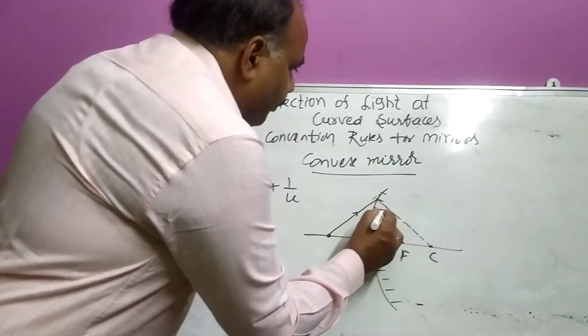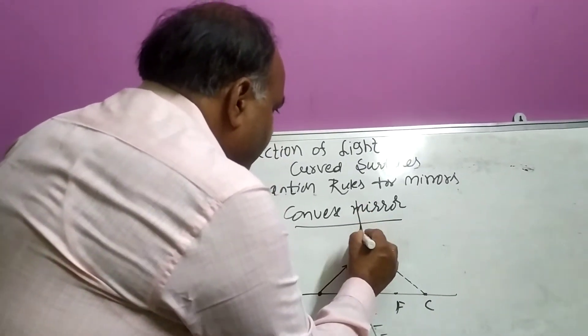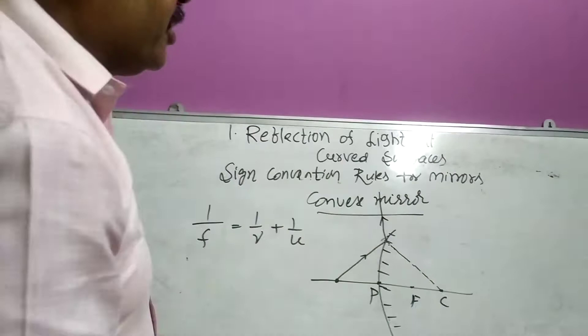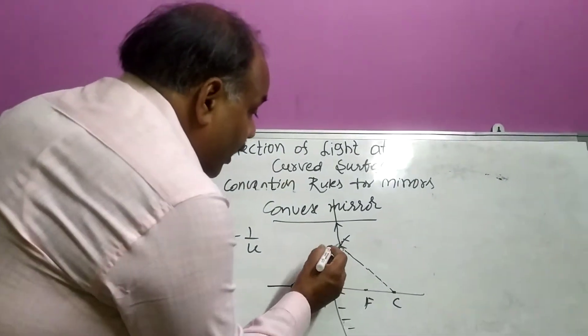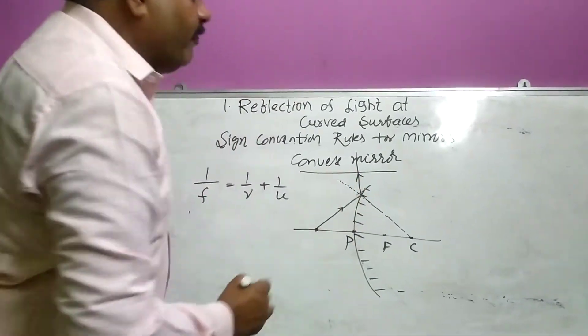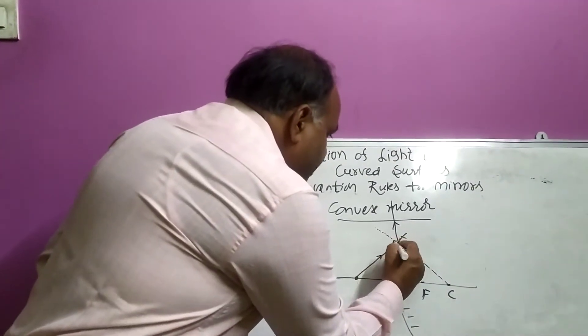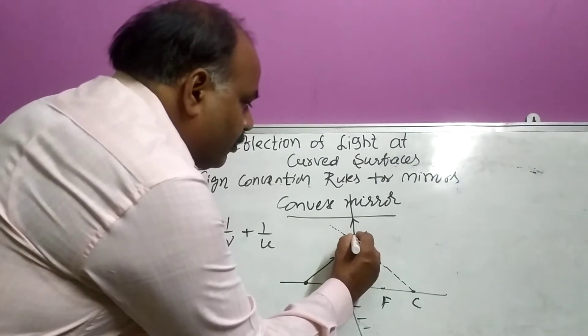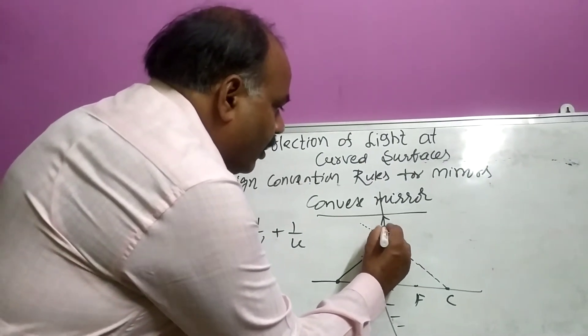So it reflected in this direction. How we are taking here, you see, according to reflection of rules, angle of incidence will be equal to angle of reflection.